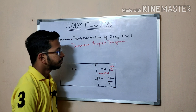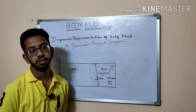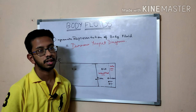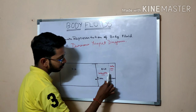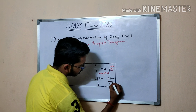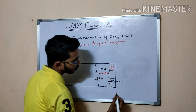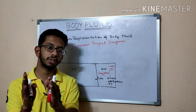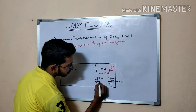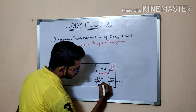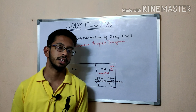So why draw the dotted line at all if ions can freely move? Because this particular membrane is impermeable to proteins. Proteins cannot cross from the intravascular compartment into the interstitial compartment. The membrane between ECF and ICF (solid line) is also impermeable to proteins. That is why the dotted line is drawn.